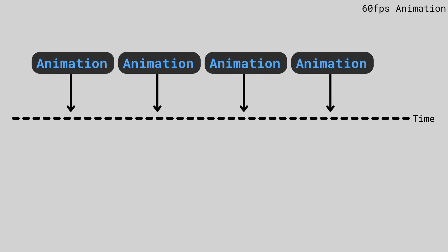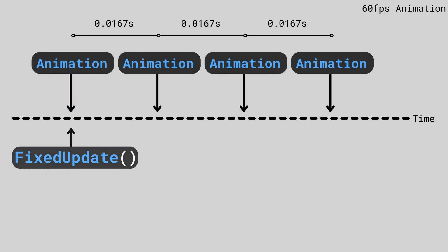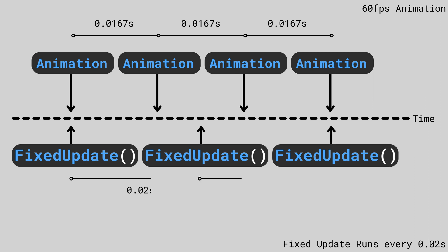On the flip side, if you put all your logic into FixedUpdate, you'd have a different set of issues. Since FixedUpdate is called at set intervals, your logic will also be executed at set intervals, and this can cause inconsistencies with things like animation and Transform-based movement. For example, an animation you want playing smoothly each frame will only update at set intervals, causing choppy or delayed animation feedback.